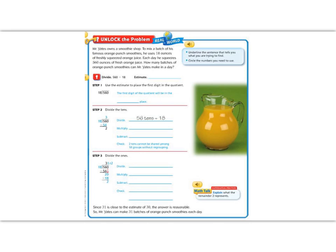As always, let's begin by reading the blue box. It says, underline the sentence that tells you what you're trying to find. Remember that comes at the end of a word problem. How many batches of orange punch smoothies can Mr. Yates make in a day? And circle the numbers we need to use. He uses 18 ounces of orange juice and he squeezes 560 ounces of orange juice. And we know that we're going to divide because he's going to share each amount of orange juice into each smoothie.